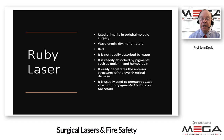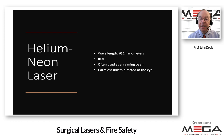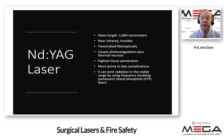The ruby laser is used primarily for ophthalmic surgery at 694 nanometers. It is red, readily absorbed by pigments such as melanin and by hemoglobin, and easily penetrates the anterior structures of the eye — which can cause retinal damage — but is usually used to photocoagulate vascular and pigmented lesions in the retina. The helium-neon laser is red, harmless, and less directed at the eye; it is often used as an aiming beam for lasers that have very large wavelengths and are in the infrared.